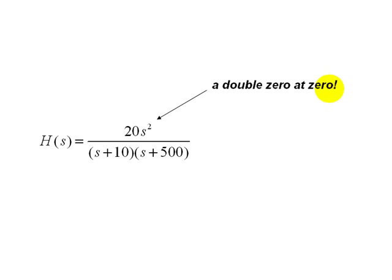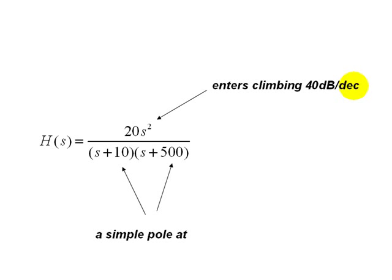To find the amplitude in decibels, we notice that there is a double zero at zero. That signifies that the curve will enter climbing at a slope of 40 decibels per decade. We also realize there is a simple pole at 10 radians per second and another at 500 radians per second. So there are going to be two knees, two elbows, two kinks in that plot — one at 10 and another at 500. Each one of them reduces the slope of the curve by 20 decibels per decade.